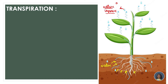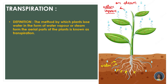Water is lost from plants in the form of water vapor or steam through the leaves. Leaves have tiny pores known as stomata, through which transpiration takes place — we will read about that in detail later. Looking at the definition: the method by which plants lose water in the form of water vapor or steam from the aerial parts of the plants is known as transpiration.